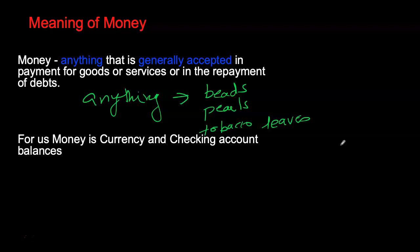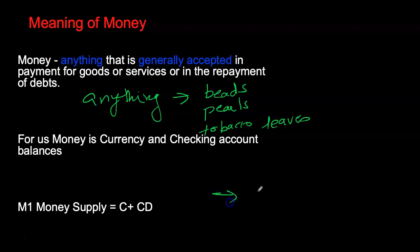For us today, money is more like currency and checking accounts. Currency would be your paper notes and coins, and a checking account is your account at a local bank where you deposit money. This form — currency and checkable deposits — is also what we refer to as M1 money supply. M1 is the most liquid form of money: cash or assets that can be immediately used for purchases of goods and services. There are other aggregates such as M2 and M3, but M1 is your most spendable form of money.